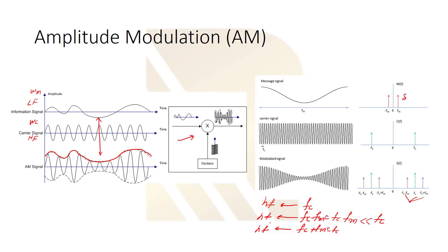We have succeeded — we produced a signal with high frequency. And what about the data? In modulation we want to keep our data, and yes, if you follow the peaks of the AM signal they are exactly like the low frequency wave. So our data is preserved in the AM signal: we have produced a wave with high frequency that contains our data. This is AM modulation.